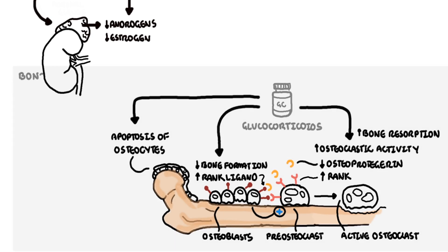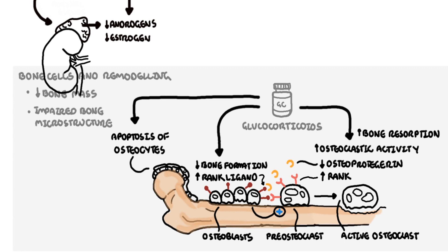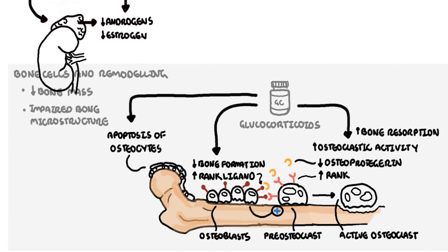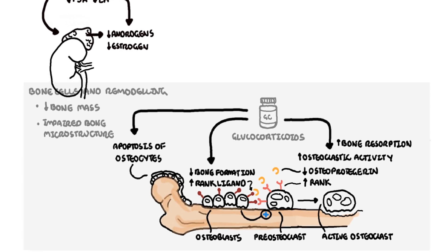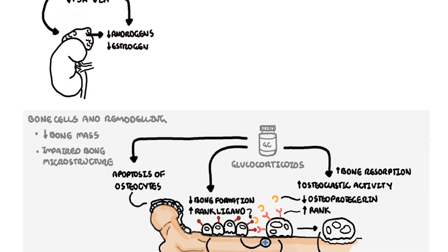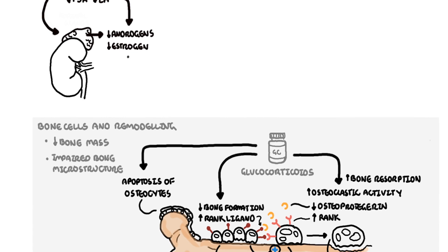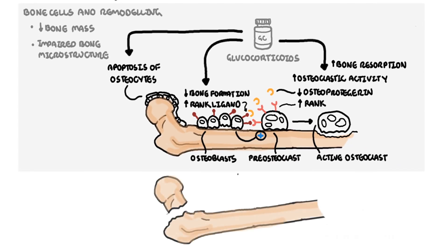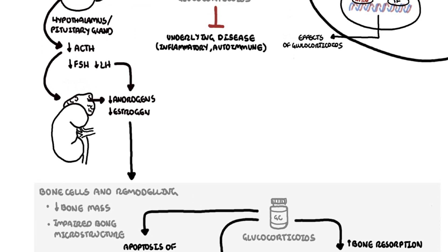In summary, glucocorticoids cause bone cell remodeling, reducing bone mass and impairing bone microstructure. Glucocorticoids also increase bone resorption by decreasing secretion of androgens and estrogens. The net bone resorption by osteoclasts reduces bone mineral density and bone remodeling, increasing the risk of fractures. Bone resorption increases serum calcium and phosphate levels due to the breakdown of bone minerals.